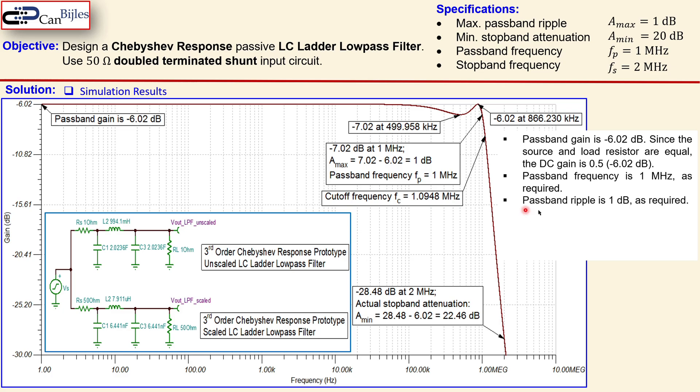The passband ripple is 1 dB as required and stopband attenuation is 22.46 dB. You can see that in this label. You can see that here minus 28.48 dB at 2 MHz. That means actually go down from minus 6.02 dB all the way to minus 28.48 dB. That is actually a difference of 22.46 dB and that is at least 20 dB. So that's actually the required minimum we want. So 22.46 dB is larger than 20 dB. So it's also met.